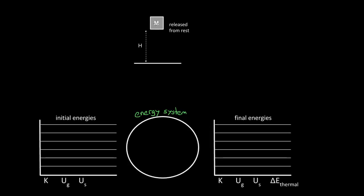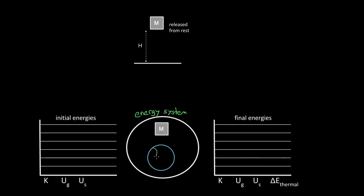Let's say you took a mass M and released it from rest from a height H, and this mass falls down. The first thing we should do is choose what is going to be part of our energy system — whose energies are we going to keep track of? The way people typically do this, they say it starts with potential energy and turns into kinetic energy. What you're really saying is that the mass is part of your system. And if you're talking about gravitational potential energy, you're also talking about the Earth — the Earth is part of your system too. So now that we've selected our system, we can start charting what the energies look like.